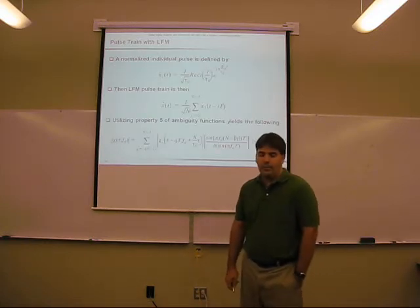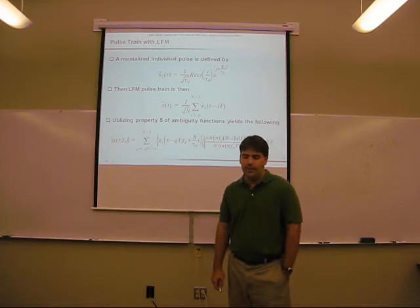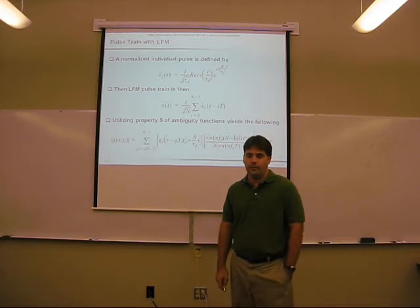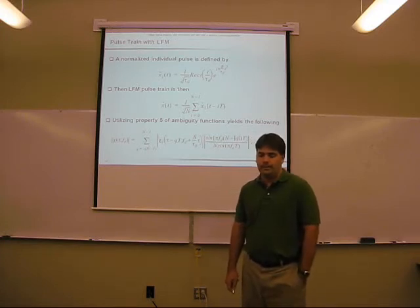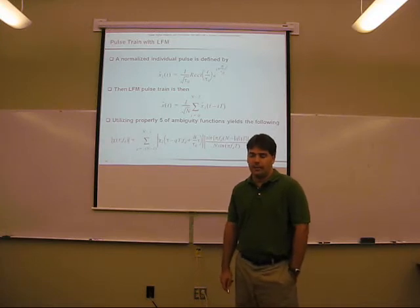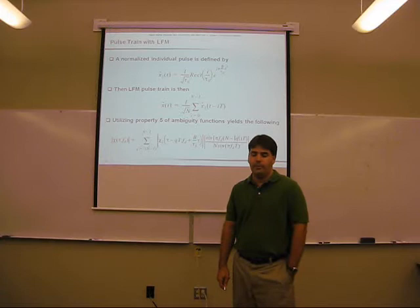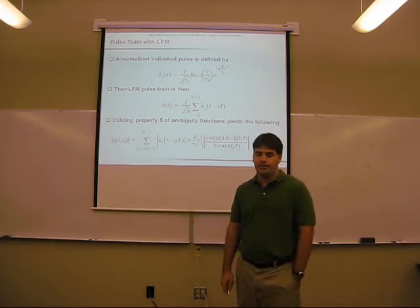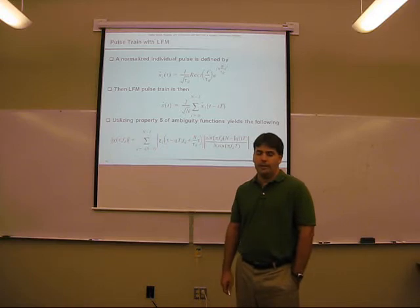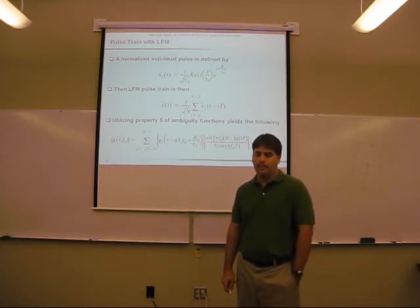A normalized individual pulse in this train is defined by X sub one of T. It is normalized by the pulse width tau zero. It is limited by the rectangular function from minus tau zero over two to tau zero over two. And the quadratic phase term is added to provide the linear frequency modulation. The linear frequency modulated pulse train is then given as the summation of N individual pulses.